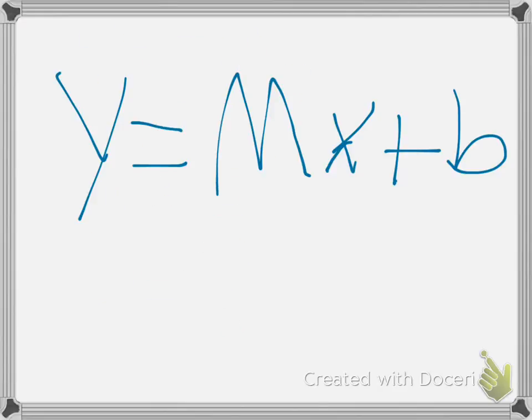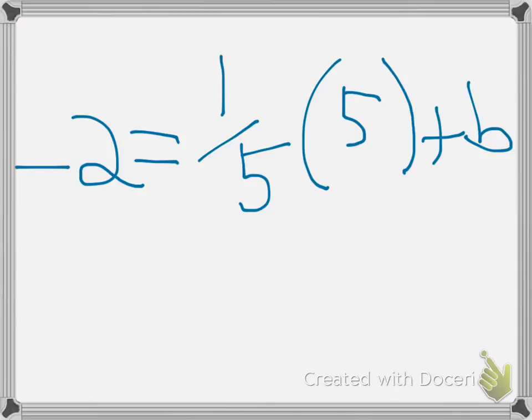The equation we're going to use is y equals mx plus b. And then when I plug everything in, we get -2 equals 1/5 times 5 plus b.